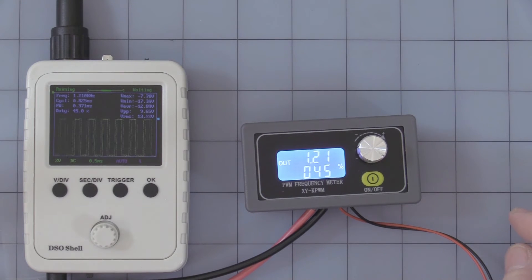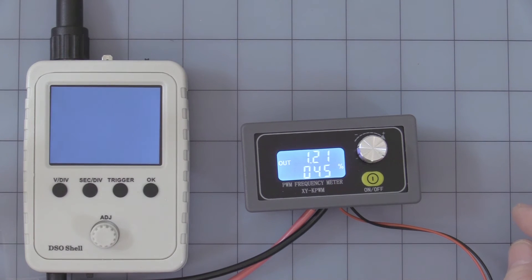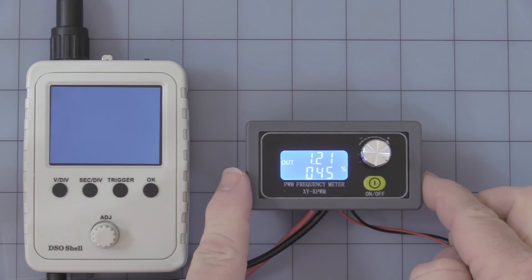Now let's get into the difference between normal mode and what they call the accurate mode. Normal mode is good from 1 hertz to 150 kilohertz. Accurate mode is only good from 1 hertz to 15 kilohertz, but it does give you an extra decimal point range in the duty cycle. So let me show you how to get into that.